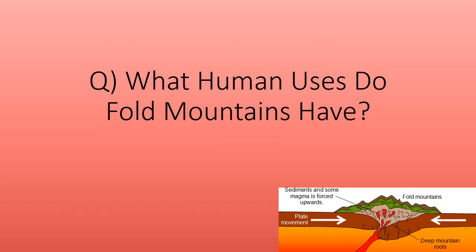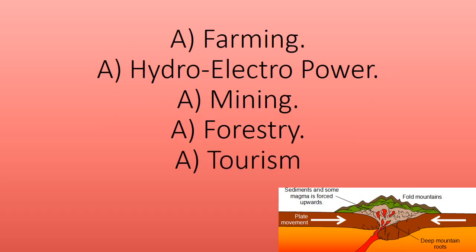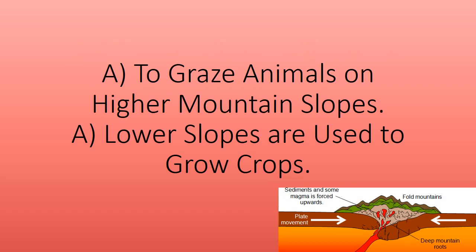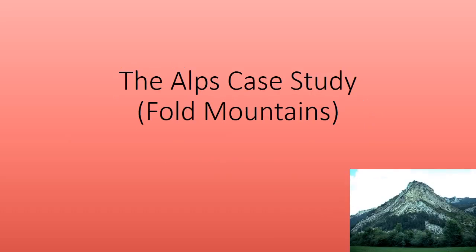What human uses do fold mountains have? Farming, hydroelectric power, mining, forestry, and tourism. Animals are grazed on higher mountain slopes, while lower slopes are used to grow crops.